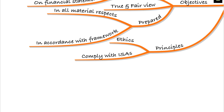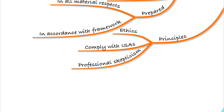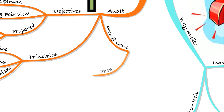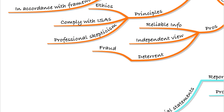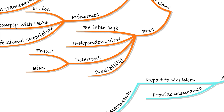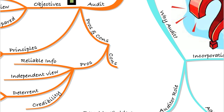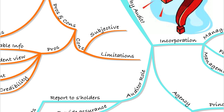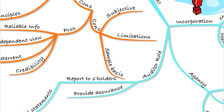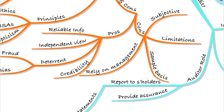The principles behind the audit include the ethical principles, which we'll look at later. We also need to comply with all of the auditing standards — the ISAs — and deal with professional scepticism, making sure we don't have the wool pulled over our eyes as auditors. The pros of auditing are that you get reliable information, an independent view, a deterrent to management against fraud or bias, and credibility for the financial statements. On the downside, it is a little subjective — the ISAs are open to interpretation. Limitations include the fact that not 100% of balances or transactions are tested; it's on a sample basis. We also have to rely to a certain extent on management and assess their integrity.